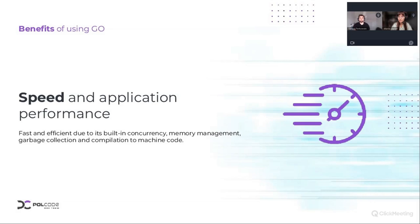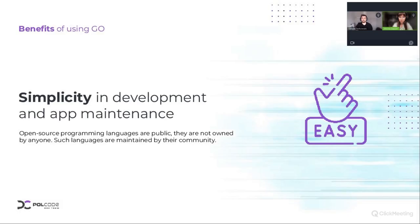That sounds like a time saver and of course money saver — to be able to compile code much quicker than in other languages. That basically means we are able to build some products in Golang simply more effectively than, let's say, in Java or Python. That sounds great. Yes, that's true. Go is also very simple in development and in maintenance. Go is an open source programming language that allows you to contribute to the source code, but probably you don't have to because the code base is stable enough and well tested in practice by large and smaller companies.